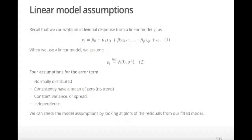Equation 1 is how we write an individual response from a linear model. When using linear models, we assume that the error terms, represented by the Greek letter epsilon, are independent and follow a normal distribution with mean 0 and variance sigma squared. This is written in mathematical notation in equation 2.